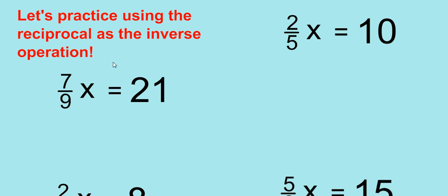Let's look at some examples here and practice using the reciprocal as an inverse operation. So in our first problem, we have 7/9 x equals 21. What are we going to multiply 7/9 by in order to reverse or get rid of the 7/9?